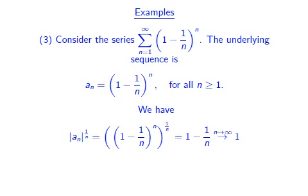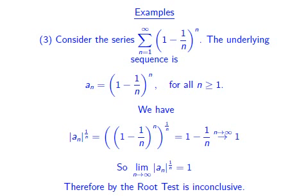Therefore the limit of |a_n|^(1/n) exists. But since this limit equals 1, the root test is inconclusive. That means we would have to apply some other method to work out whether or not our series converges.